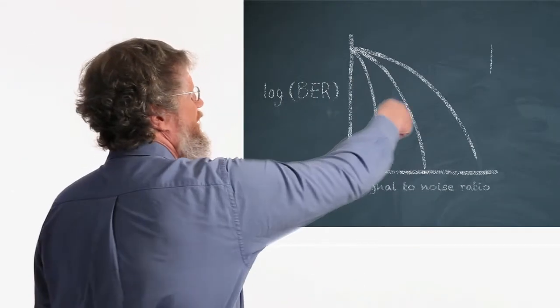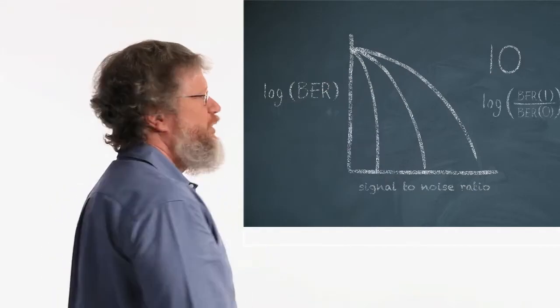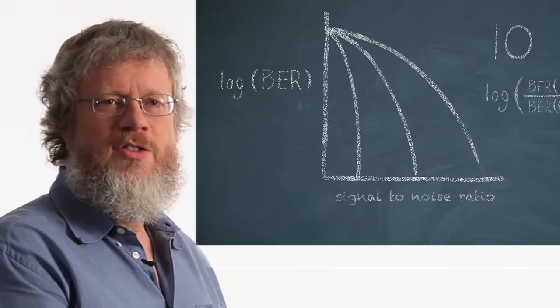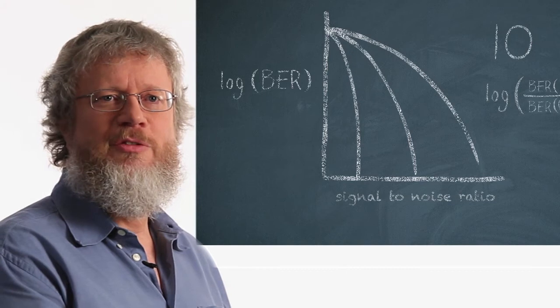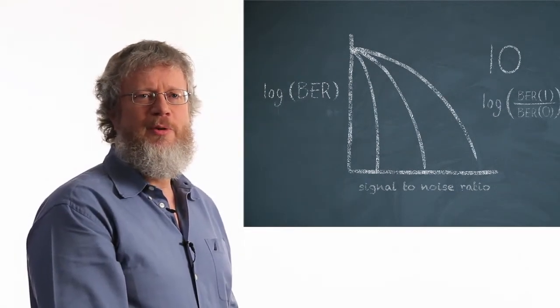Hard forward error correction uses ones and zeros. In contrast, soft forward error correction uses the log of the bit error rate. The Ciena WaveLogic Generation 3 achieves increased performance using soft forward error correction.